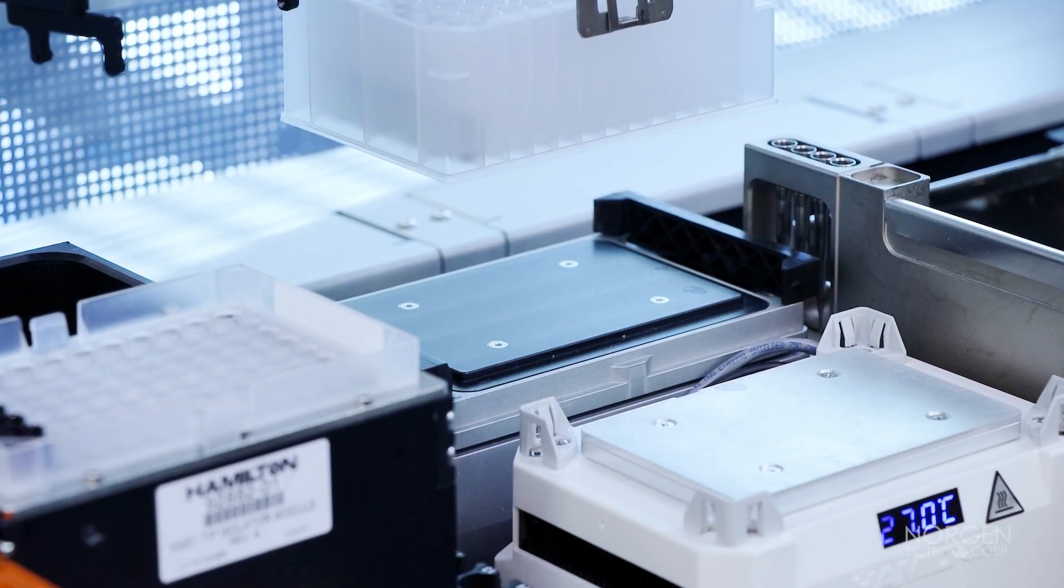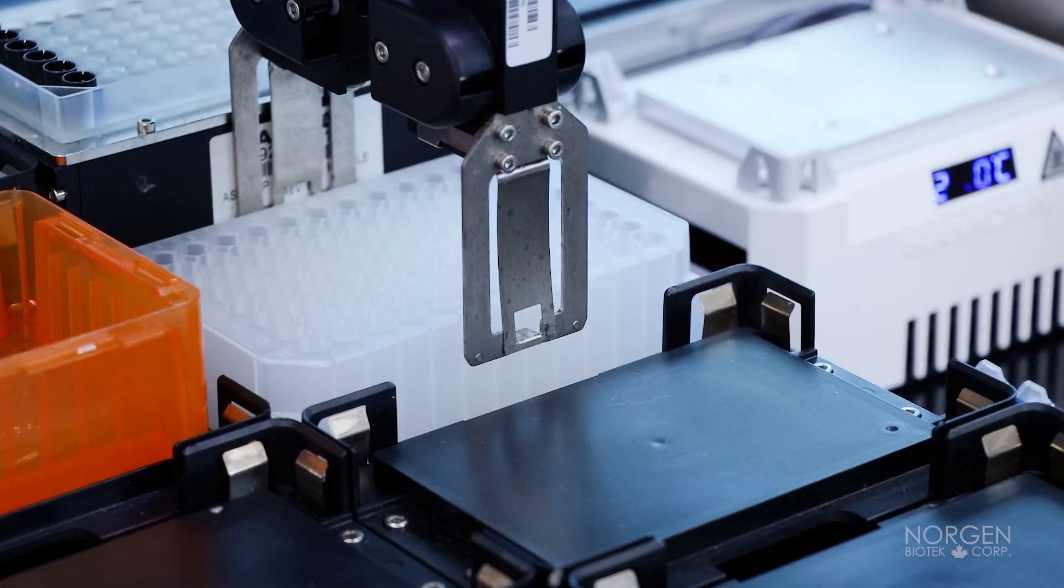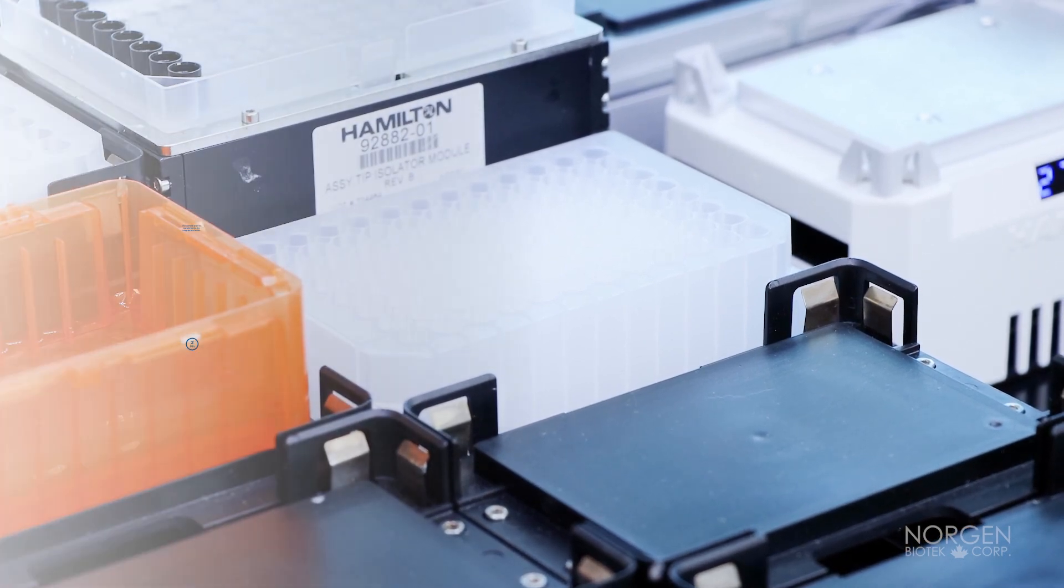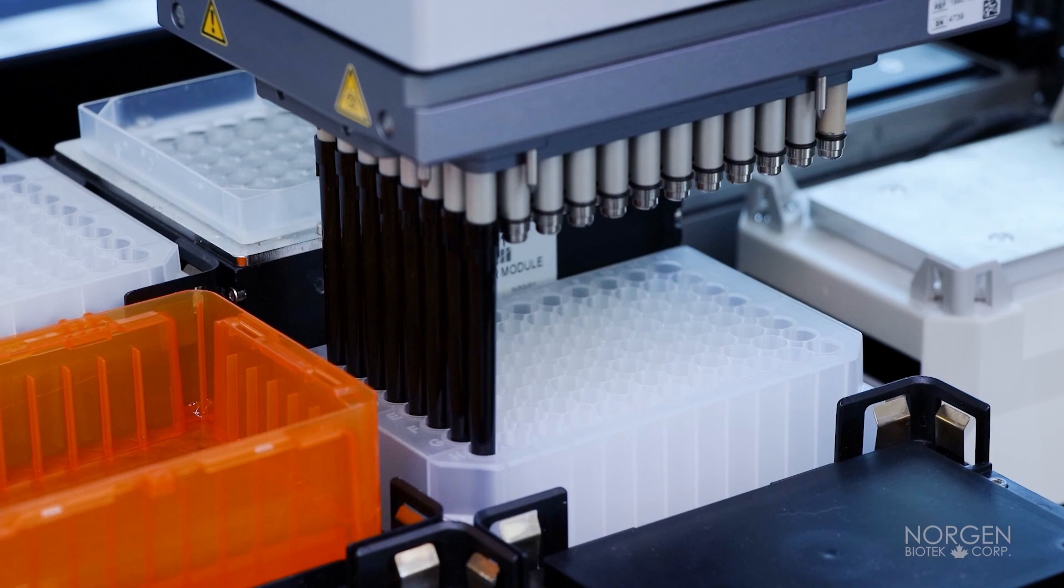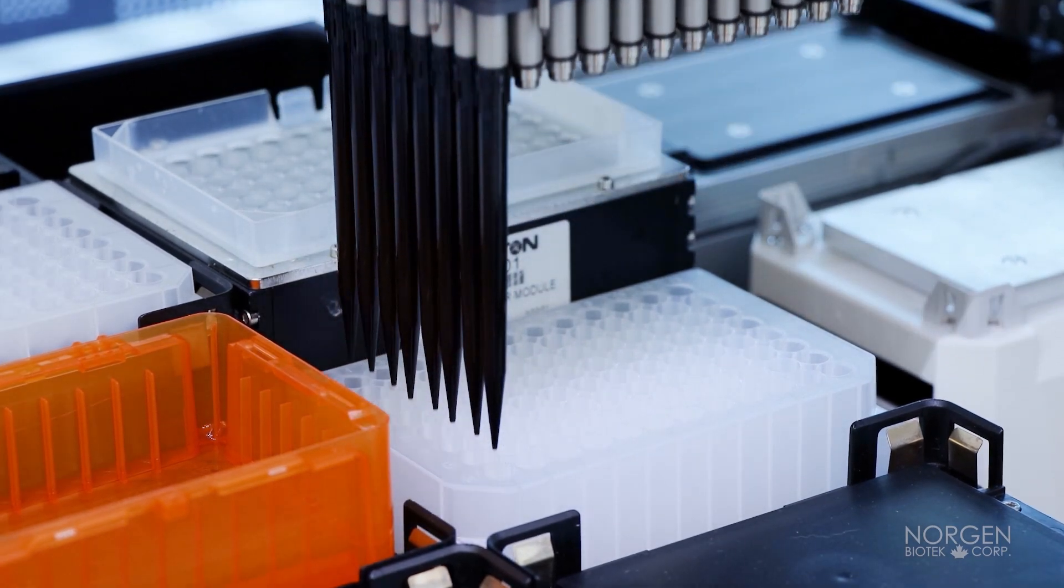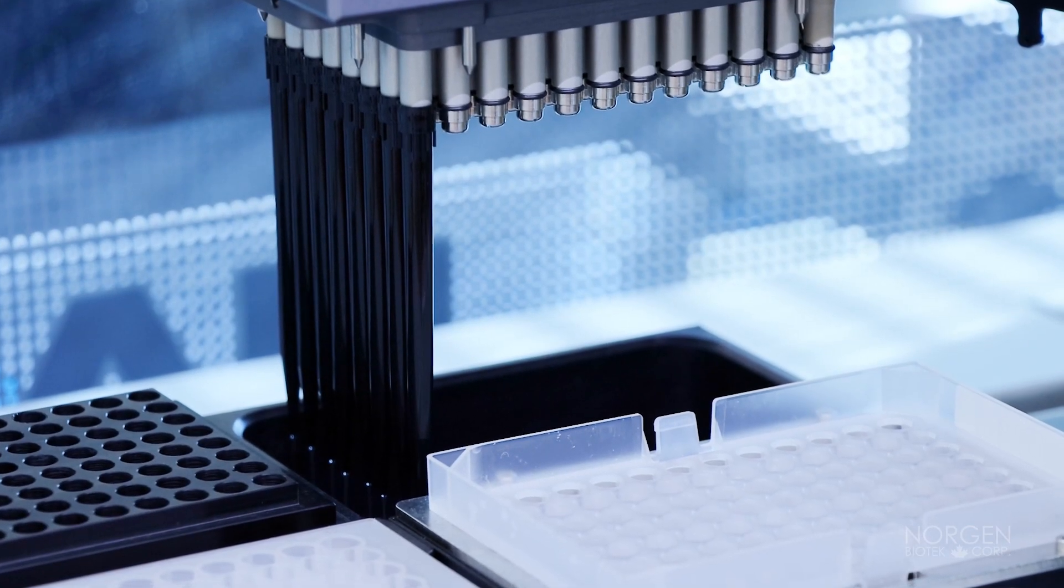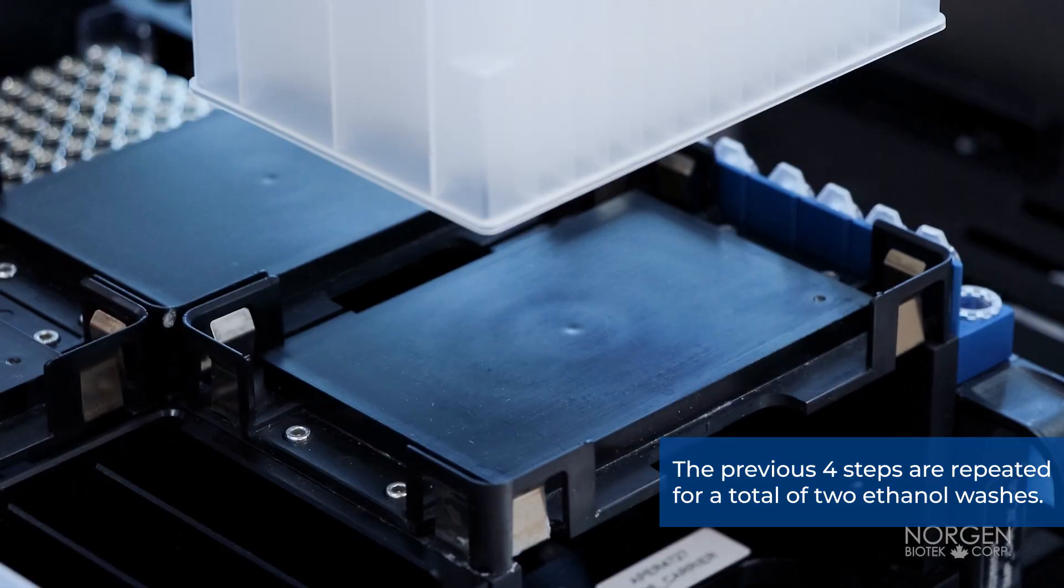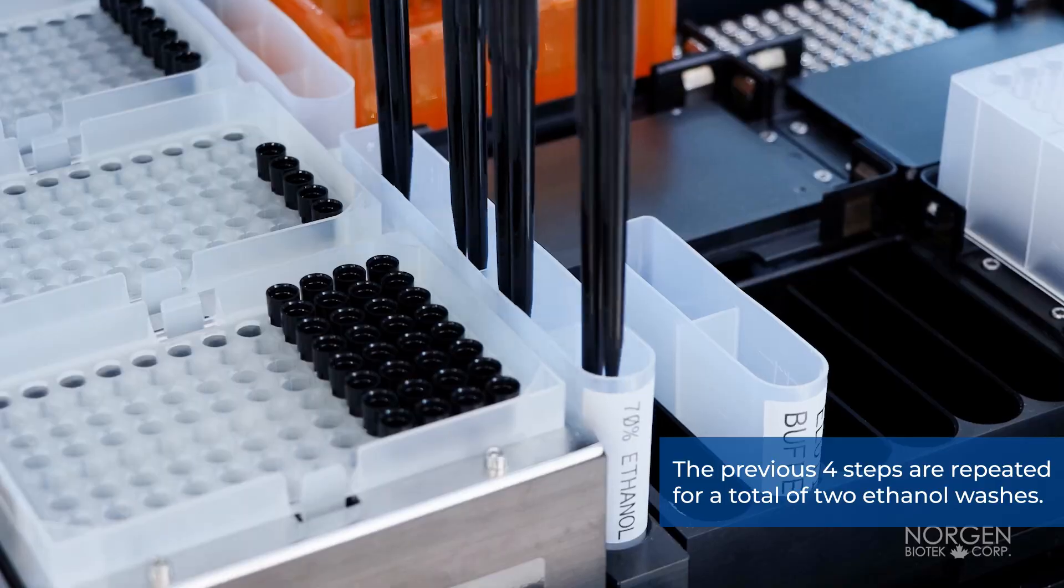The sample plate is transferred to the magnet and waits for 2 minutes to pellet the magnetic beads. The ethanol is removed from the samples and deposited into the gravity waste. The previous 4 steps are repeated for a total of 2 ethanol washes.